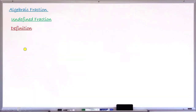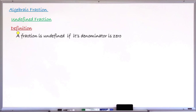To begin the lesson, let me first define what an undefined fraction is. A fraction is undefined if its denominator is zero. That is, if the denominator of your algebraic fraction happens to be zero, then that fraction is said to be undefined. The same applies to numeric fractions — if the denominator is zero, the fraction is undefined.